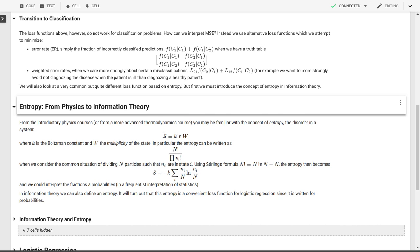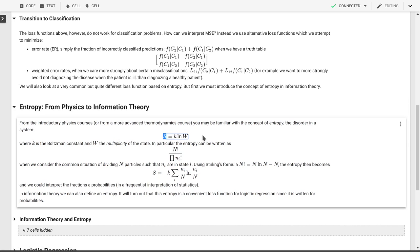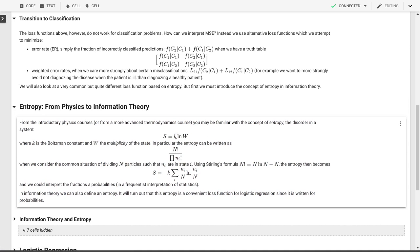So usually it's written as entropy S is the Boltzmann constant K times the natural log of W. And W can be many things but in our case we'll think of this as the multiplicity of the state.